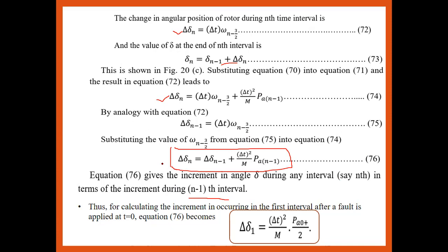This gives the changes in the load angle from the swing equation. The effect on Pe and the accelerating power is important. For the first interval after the fault is applied, equation 76 becomes: Δδ_1 = (Δt²/M)·Pa_0·(1/2). This is the rate of change of load angle or power angle in the first interval after the fault.